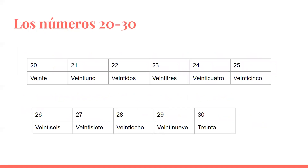Now, those numbers between veinte and treinta are special: veinte, veintiuno, veintidós, veintitrés, veinticuatro, veinticinco, veintiséis, veintisiete, veintiocho, veintinueve, treinta.